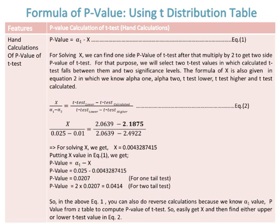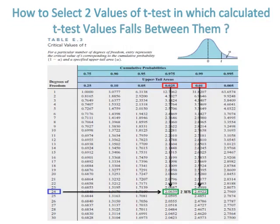So in the above equation 1, you can also do reverse calculations because we know alpha_1 value, p-value from z-table, to compute p-value of t-test. So easily get x in equation 1, and then find either upper or lower t-test value in equation 2. How to select two values of t-test in which calculated t-test values falls between them.